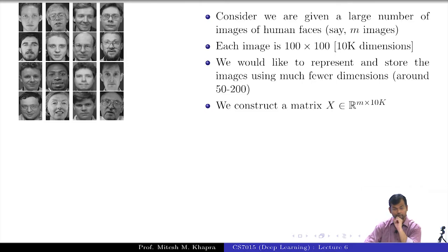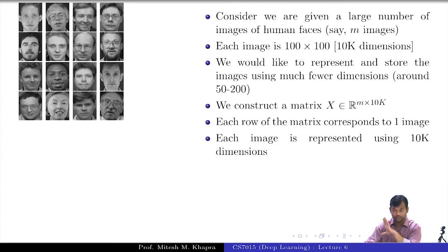We construct a matrix X ∈ R^(m×10K). What is m? The number of samples that we have, the number of data points, and each of this is of dimension 10K. Each row of the matrix corresponds to one image and each image is represented using 10K dimensions.